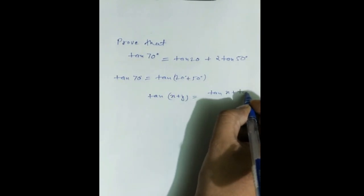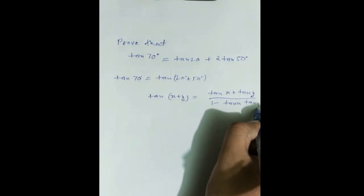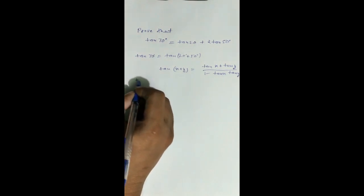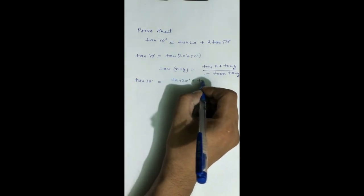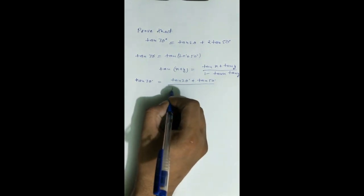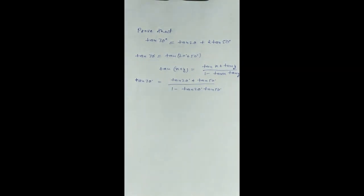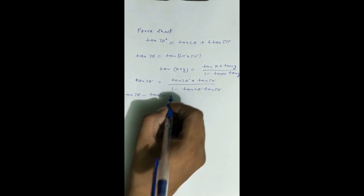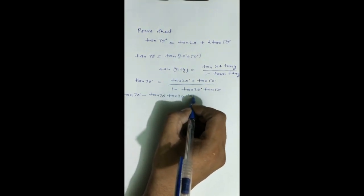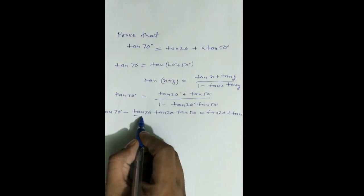tan(x) plus tan(y) divided by 1 minus tan(x)·tan(y). Then tan(70°) equals tan(20°) plus tan(50°) divided by 1 minus tan(20°)·tan(50°). Now cross multiply: tan(70°) minus tan(70°)·tan(20°)·tan(50°) equals tan(20°) plus tan(50°).